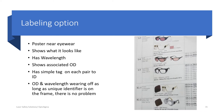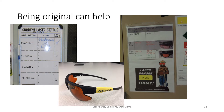A useful approach is a poster at the eyewear storage location showing what each pair looks like, with its optical density, wavelength, and a unique identifier — for example I-4 or I-5. Even if labeling wears off, if the unique identifier remains, you can reference the poster to retrieve the information. One chart shows current laser status indicating which laser is in use and what eyewear to wear; another shows eyewear with wavelength in use. A plastic heat-shrink wrap on a pair can also identify which eyewear goes with which wavelengths.